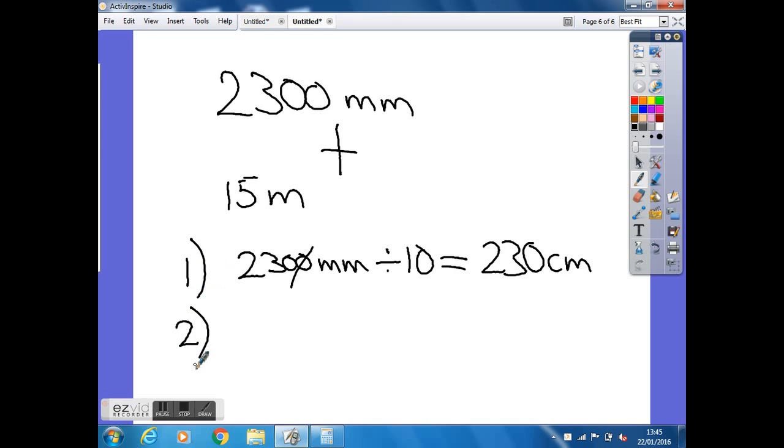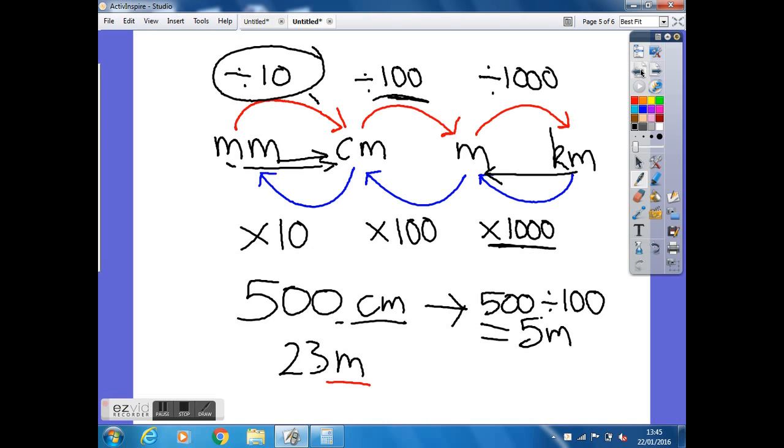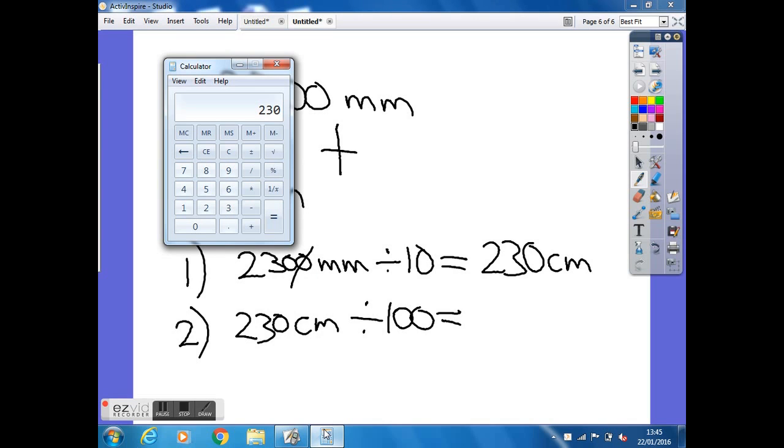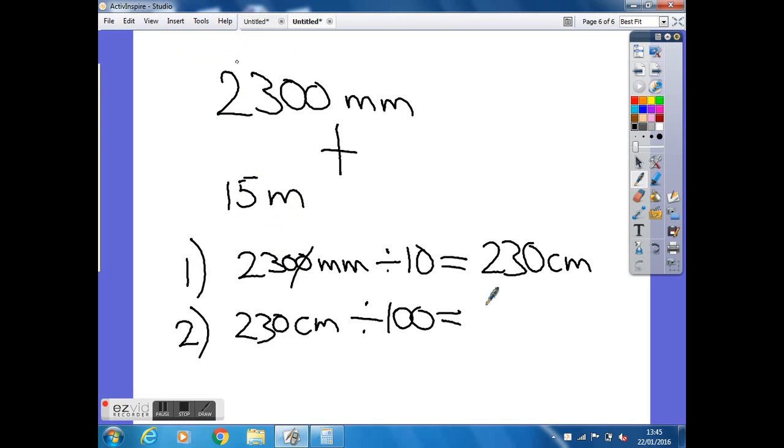So obviously that's your first step. Your second one, which we now need to change that 230 centimeters across to meters to finish with. Let's go back to the other diagram again. Centimeters across to meters is dividing by 100. So we know that we need to do 230 divided by 100 to change our answer into meters. So 230 divide by 100, that gives you 2.3. That's going to be 2.3 meters. And that's your final answer.